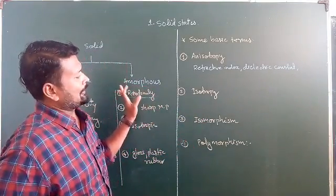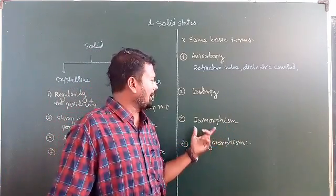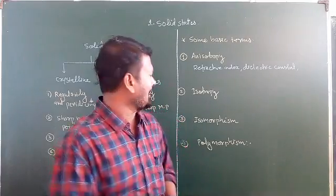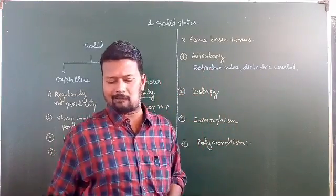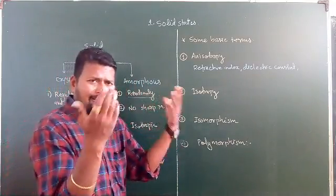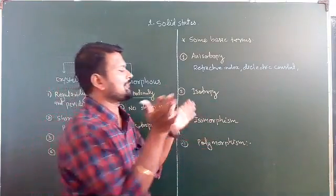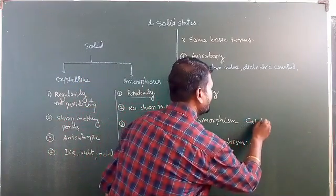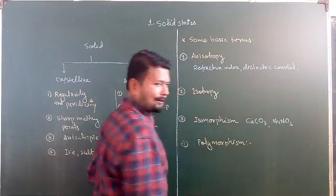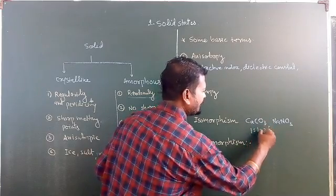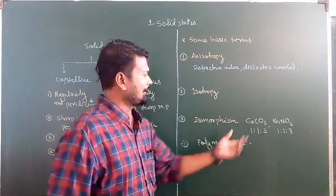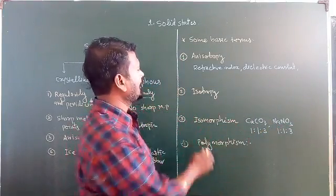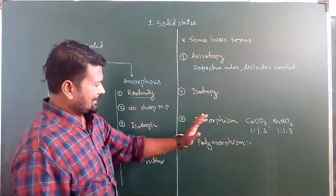Now let us discuss isomorphism and polymorphism. Isomorphism means two different crystalline substances having the same crystal structure. For example, CaSO₃ and NaNO₃ are different solids but have the same crystal structure — that is isomorphism.